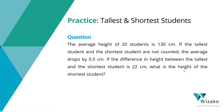This is a GRE quant practice question, a medium difficulty question from the topic averages and statistics. The average height of 20 students is 130 cm. If the tallest student and the shortest student are not counted, we are removing 2 students from this set of 20, the average drops by 0.5 cm — so initially it's 130, it will come down to 129.5. The difference in height between the tallest and the shortest student is 22 cm. We need to find out the height of the shortest student.